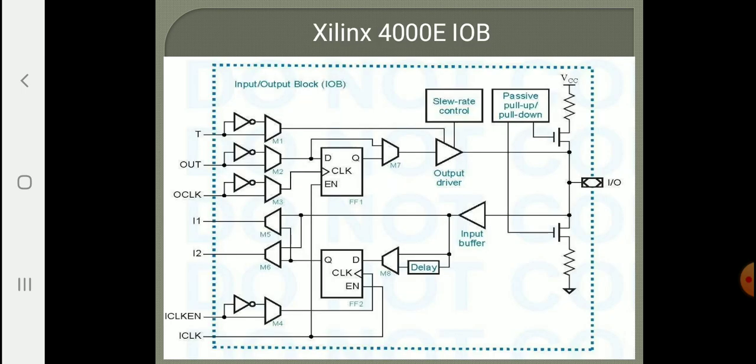Looking at the I/O block in the 4000 series FPGA — specifically the 4000E type of Xilinx FPGA — on the right side is the I/O port where external devices can be connected. That pin is single-bit and data can either be received or sent via that I/O block. On the left side, I1 and I2 are given to the internal CLB for processing, so data from the external unit can be connected to the FPGA's CLBs.